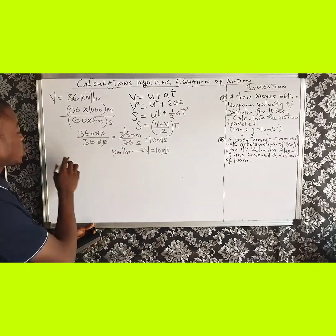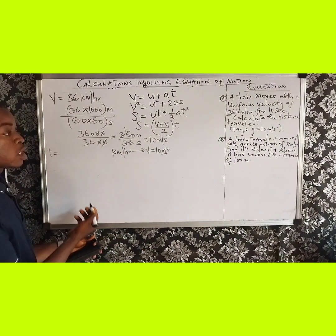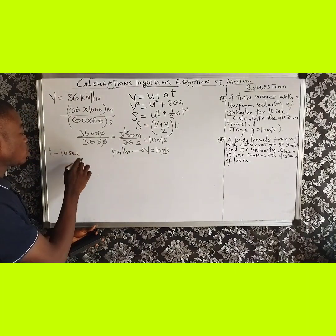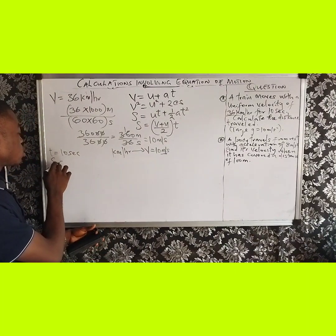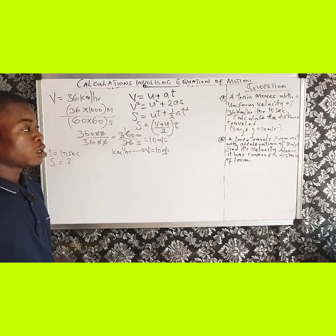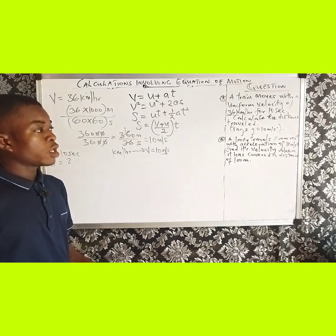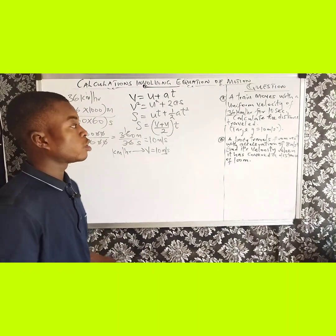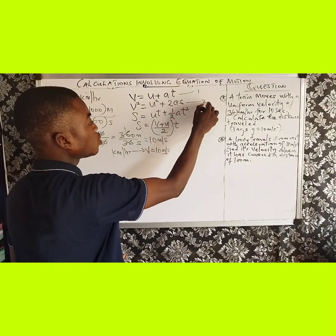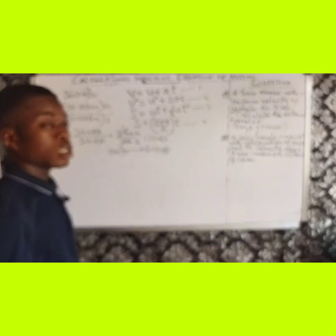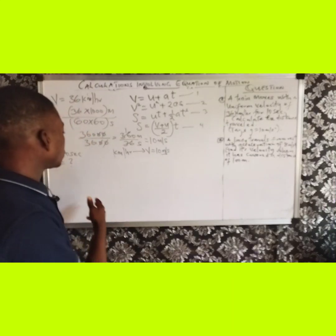So these are our given parameters. The first parameter is velocity V equals 10 meters per second. The second parameter is time T equals 10 seconds. The third one, distance S, is not given — that is what I am using to calculate. So let me give it a question mark. Now let me look at the four equations of motion on the board and identify which one applies.